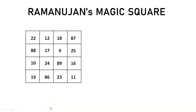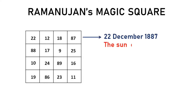Hello everyone. In my previous video we have seen that this is Ramanujan's magic square, in which he filled the first row with his date of birth and the sum of every row, column, diagonal, and many more combinations are all equal to 139.